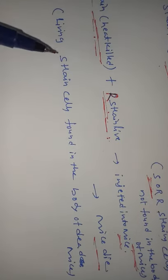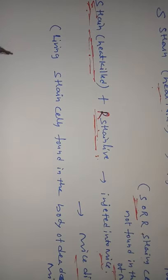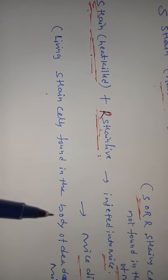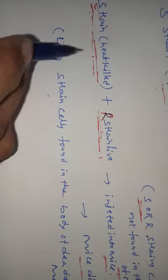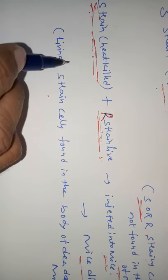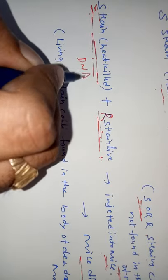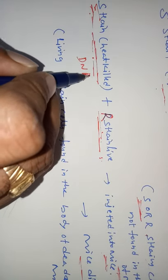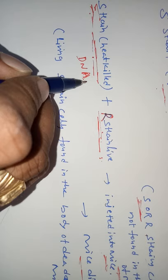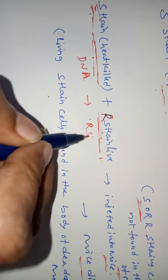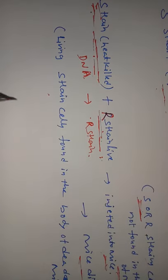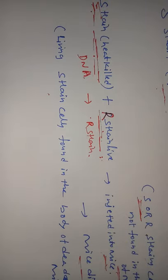Why did the mice die? Griffith concluded that when the living strains were found in the dead mouse's body, the DNA — the genetic material — present in the heat-killed S-strains had been transformed into the R-strains. This is the transformation principle: the transfer of genetic material from one bacterium to another through a surrounding medium.